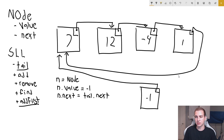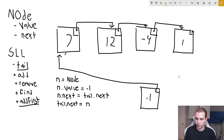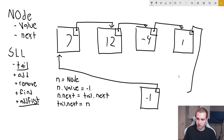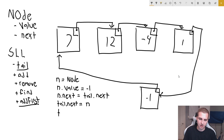Now we change the pointer of tail.next to go to this new node: tail.next equals n. We've successfully changed the old tail to point to this new node, which is going to be the last node in our list. The last step is to update the tail reference itself: tail equals n. And that's all we need to do to add a node to the end of the list.